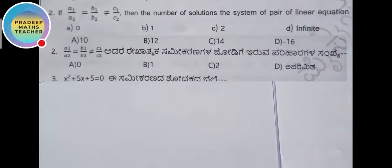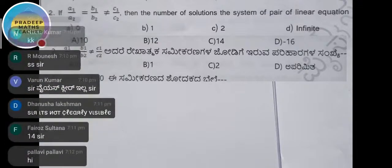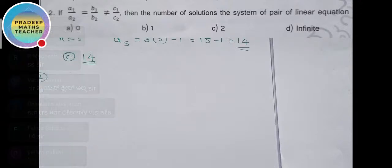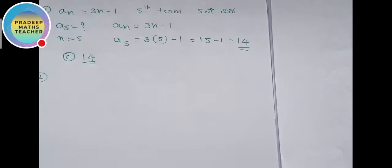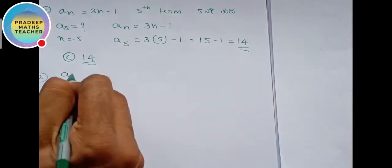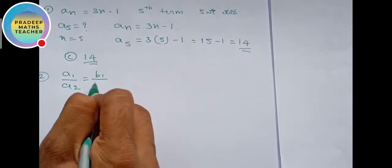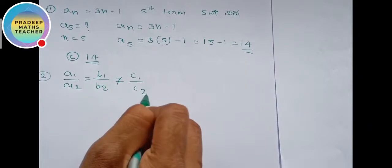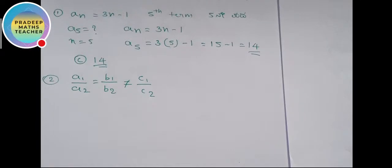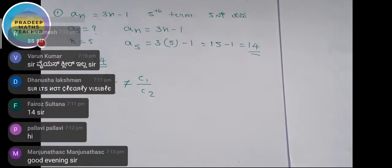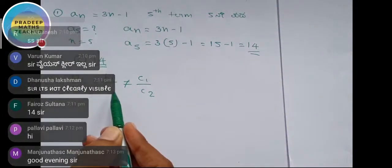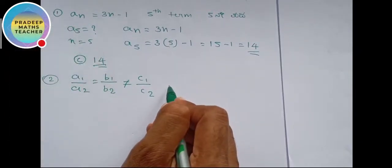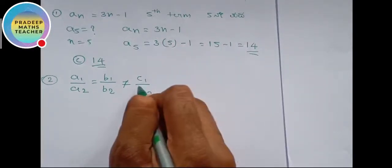If you have the condition a1 by a2 equals b1 by b2 is not equal to c1 by c2, then find the number of solutions the system of pair of linear equations has. When a1 by a2 equals b1 by b2 is not equal to c1 by c2, then we have a consistent pair of equations. This is the condition.